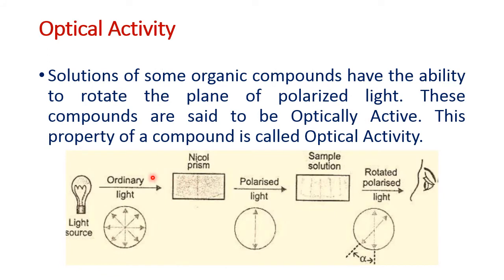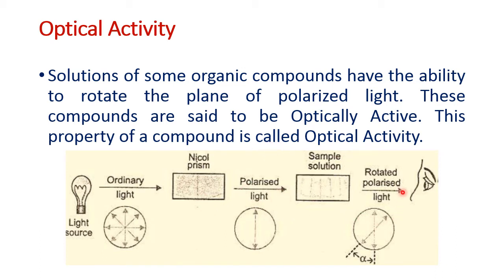Organic molecules which are asymmetric, dissymmetric, or chiral — meaning they don't have a plane of symmetry — have a special property: they can rotate the plane of polarized light. Such compounds are called optically active, and this property is called optical activity. To understand this, we need to look at this diagram and understand this experiment.